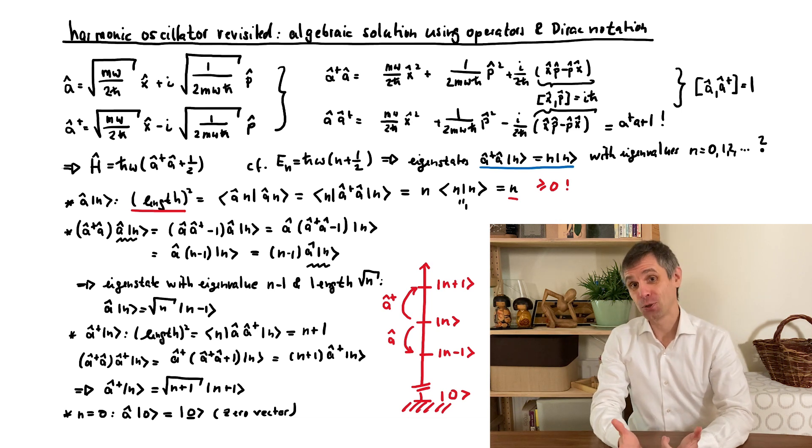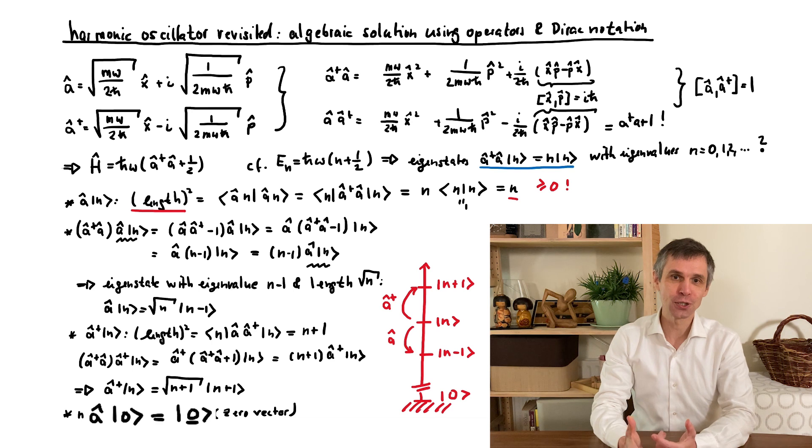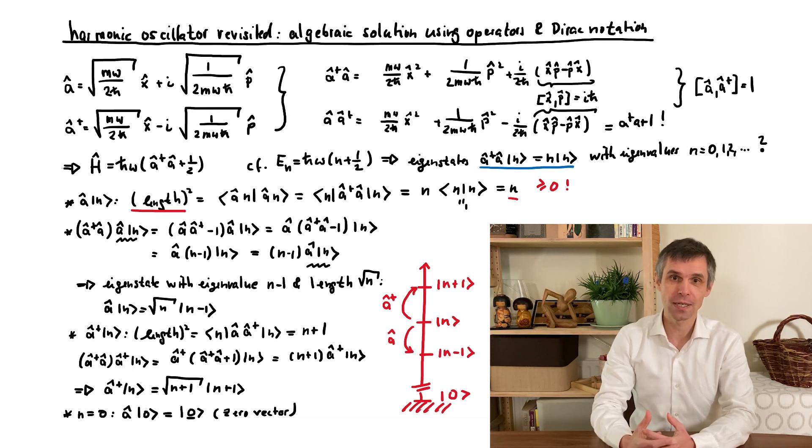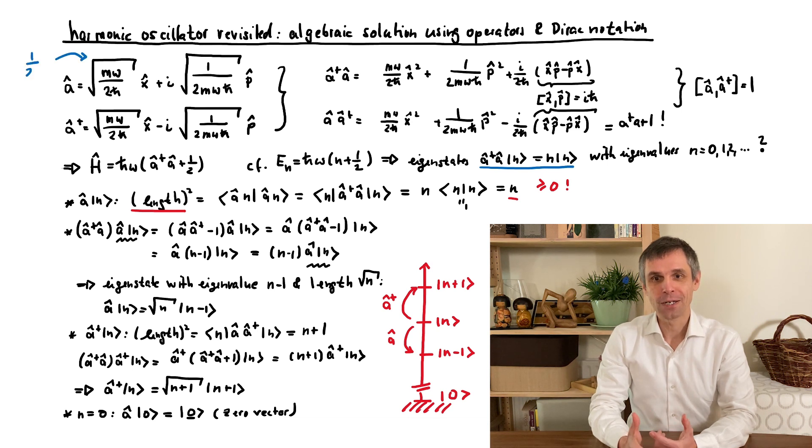To obtain the corresponding wave functions, we now simply convert the termination condition for the state with n equal to 0, the ground state, into a differential equation. So only now we have to use our definitions of these operators.